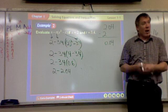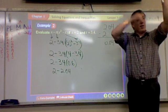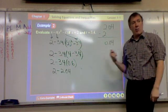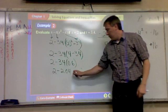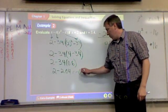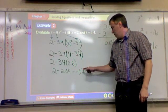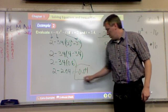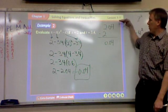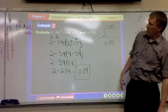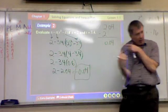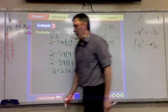If I switch the problem around and it goes 2 minus 2.04, it's the same answer, but what changes? Negative. It's negative. Negative 0.04. So 2.04 minus 2 is 0.04. 2 minus, switched around. All you're changing is the sign. Because you flipped it.